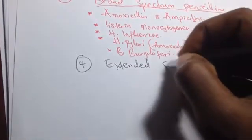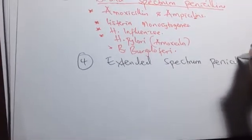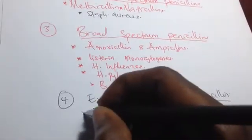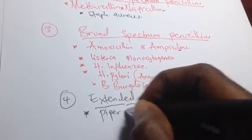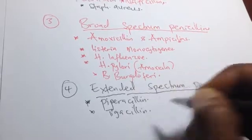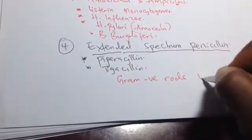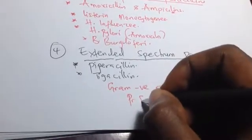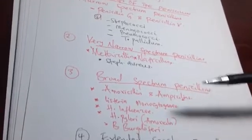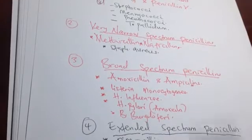Number four, we have the extended spectrum penicillins. Most importantly we have piperacillin and ticarcillin. These work against most gram-negative bacteria broadly, including Pseudomonas aeruginosa. So to summarize the subgroups of penicillins: we have narrow spectrum, very narrow spectrum, broad spectrum, and extended spectrum.